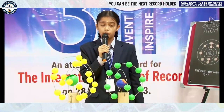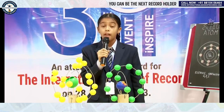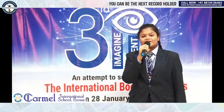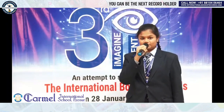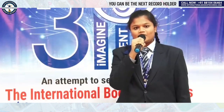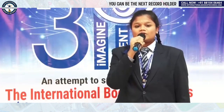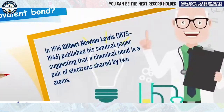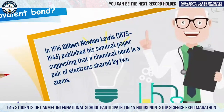Anthony Shree, doing grade 9A at Karmant National School, Hosu, is going to talk about the Electrovalent Bond. Discovery of Electrovalent Bond: In 1916, Gilbert Newton Lewis published a seminal paper suggesting that a chemical bond is a pair of electrons shared by two atoms.